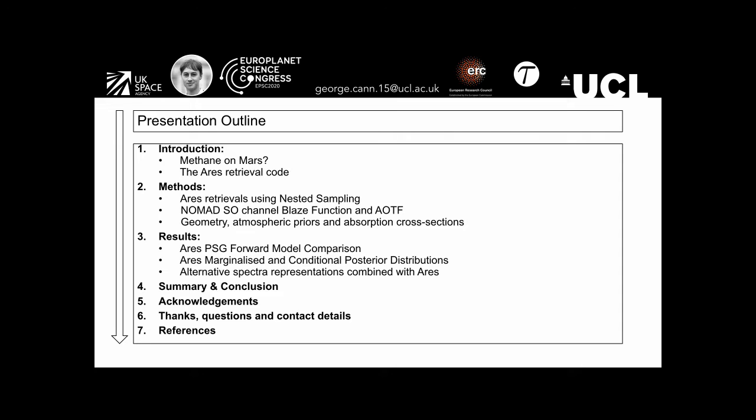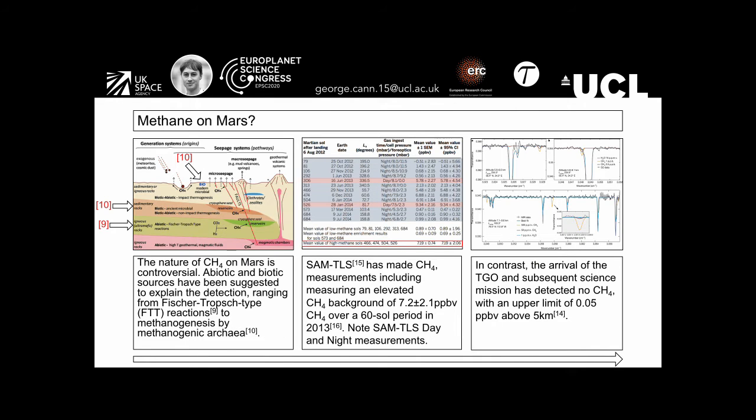Then I'll go into the results where I'm going to show that ARIES has been compared against the planetary spectrum generator in terms of its forward model, so in terms of simulating the NOMAD spectra. Then I'm going to show ARIES marginalized and conditional posterior distributions whereby we can see correlations between different Martian atmospheric parameters. Then I'll look at alternative representations for NOMAD spectra and how we can highlight absorption features and the baseline topology, and consider how these new representations may give us a better understanding of the Martian atmosphere, especially when combined with ARIES. Then I'll give a summary and conclusion, acknowledgments, thanks, questions, contact details, and finally I'll show you my references.